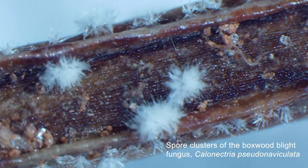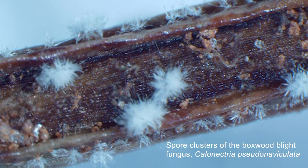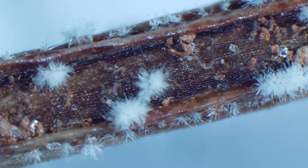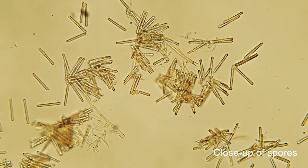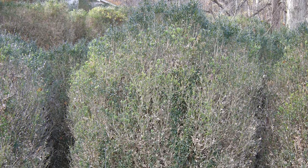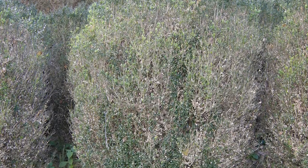The pathogen likes warm but not hot temperatures and lots of rainfall. The preferred temperatures for growth of the pathogen are about 64 to 77 degrees Fahrenheit, but the pathogen can certainly survive outside of that temperature range. Mostly we see symptoms of the disease when it's warm but not hot and there's plenty of rainfall.